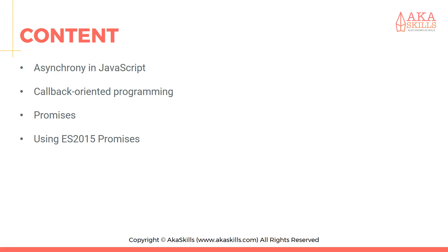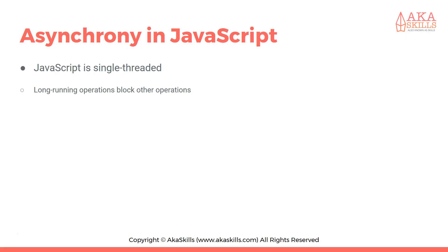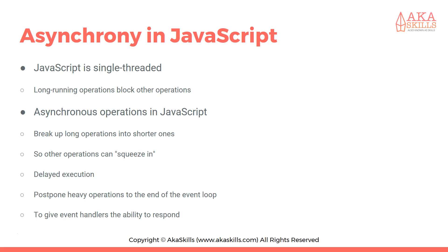After that, we're going to review async operations with ECMAScript 2015 function generators. JavaScript is single-threaded and long-running operations block other operations — that's where asynchronous operations in JavaScript come in. Basically, this breaks up long operations into shorter ones so other operations can squeeze in. It's delaying execution and postponing heavy operations to the end of the event loop, to give event handlers the ability to respond.